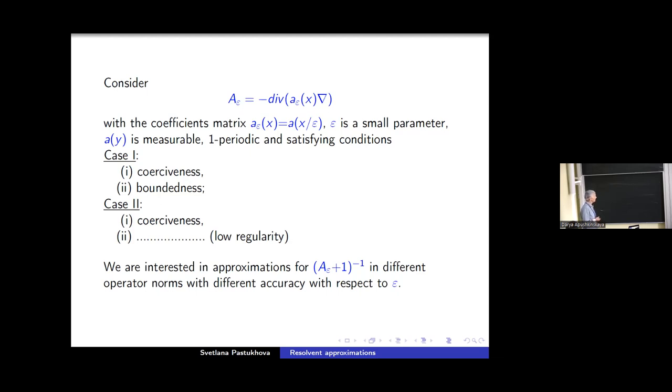We are interested in approximation of Resolvent of operator A_ε in different operator norms with different accuracy with respect to the small parameter ε. And consider two cases when elliptic coefficient matrix a_ε, which is measurable, satisfies conditions of coerciveness and boundedness.